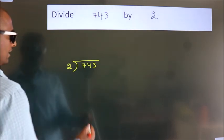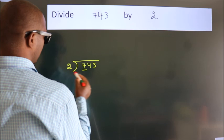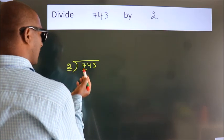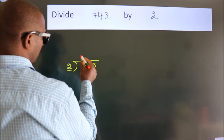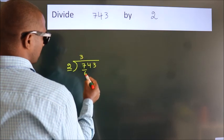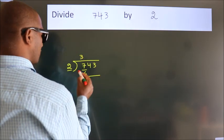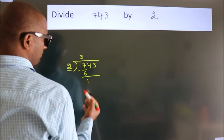Next, here we have 7, here 2. A number close to 7 in the 2 table is 2 times 3 is 6. Now we should subtract. We get 1.